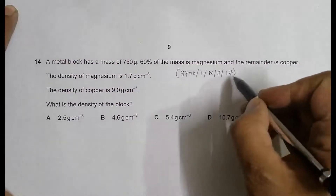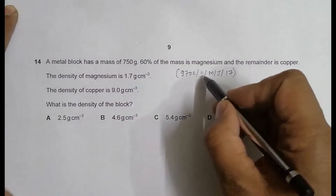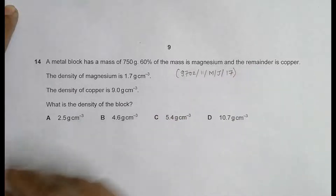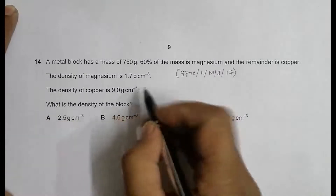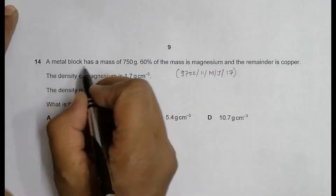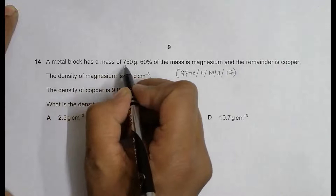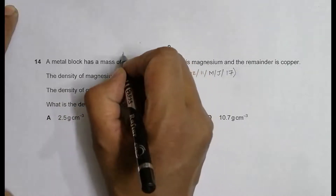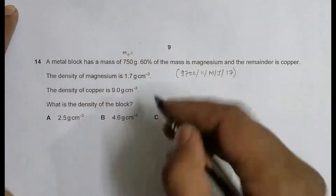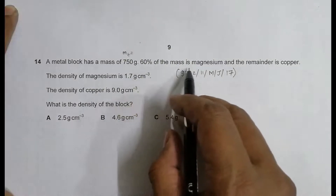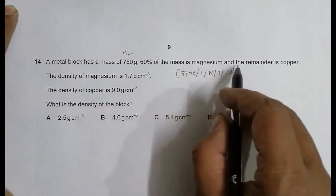Hello folks, this is 2017 major paper 11, question number 14. This is concerned with the chapter of the properties of matter. It says that a metal block has a mass of 750 grams. The total mass is equal to 750 grams, and 60% of the mass is magnesium and the remainder is copper.